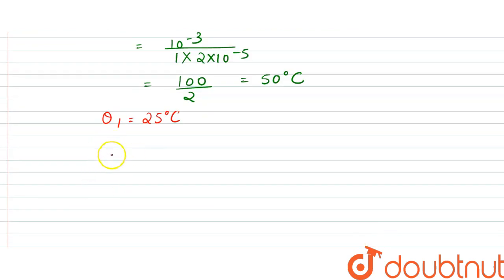So it would be 25 - θ₂ = 50, so θ₂ from here turns out to be -25 degrees Celsius. So our answer would be option D.